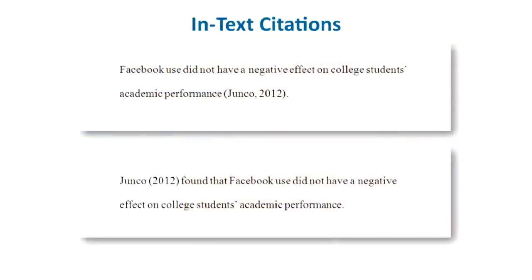In your paper, when you refer to a source you've read, like a journal article or a book, you refer to it by the author's last name and include the year it was published. You can put both the author's last name and year in parentheses at the end of the sentence. Notice that the period goes outside the parentheses. Or you can incorporate the author as part of your sentence and just place the year in parentheses.